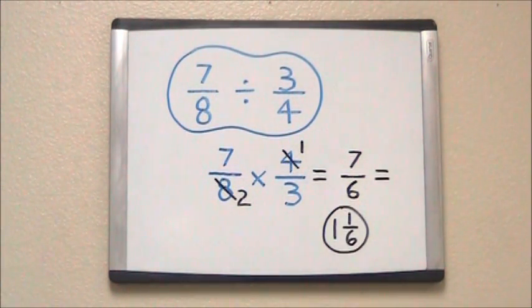To change this into a mixed number, we ask ourselves, how many times does 6 go into 7 without going over? It goes in one time. That gives us our whole number of 1. There's 1 left over. We keep our denominator for a final answer of 1 and 1 sixths.